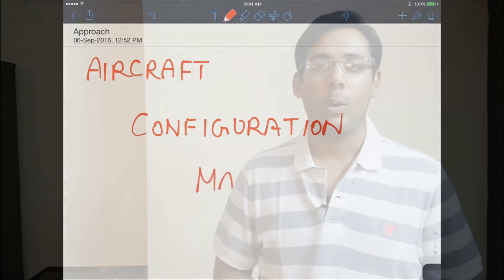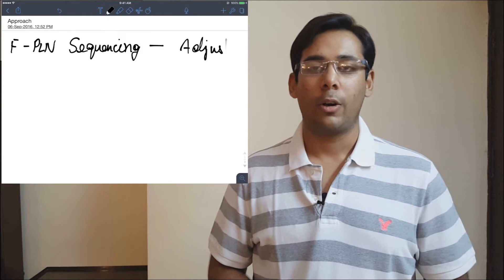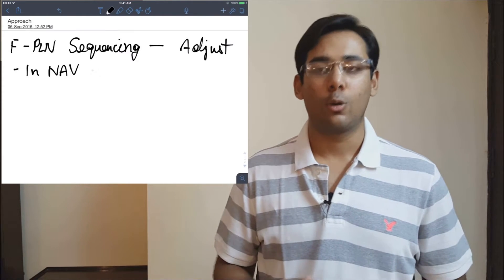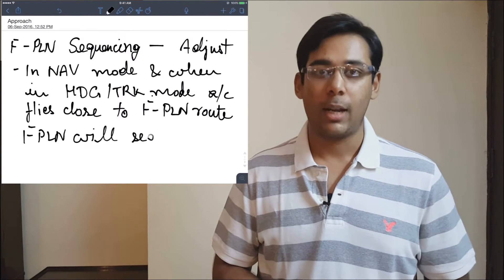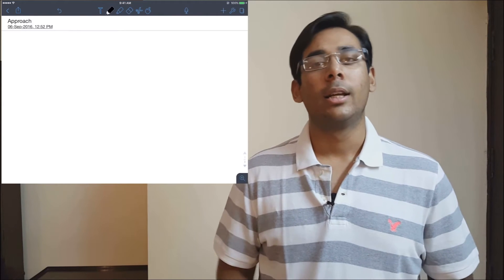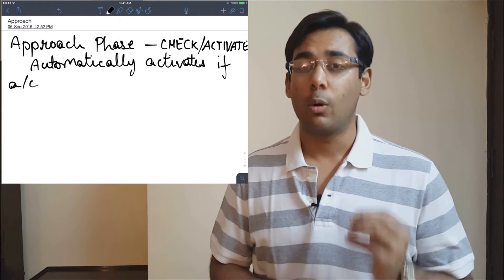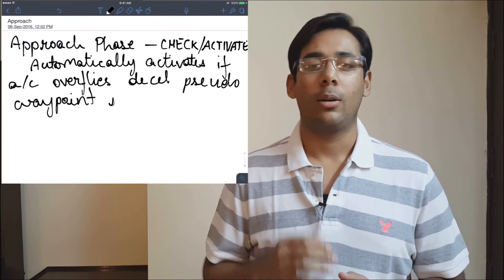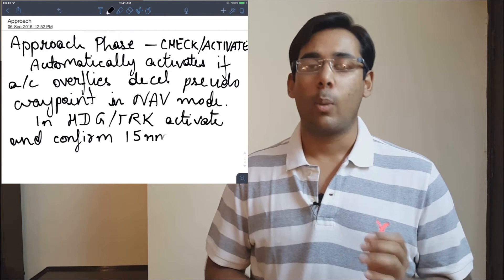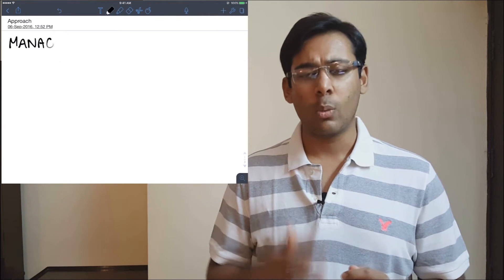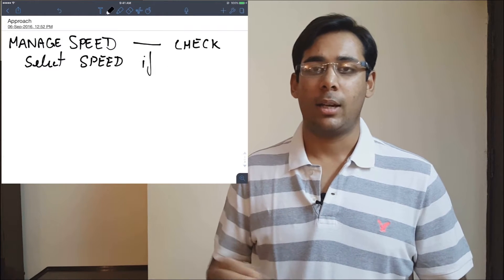Let's look at how and when to configure the aircraft. First, sequence the flight plan. If you're in NAV mode or heading/track mode and fly close to the flight plan route, the flight plan will sequence automatically; otherwise you'll need to manually sequence it. Then activate the approach phase or check if it's already activated. In NAV mode, overflying the deceleration waypoint activates it automatically. In heading/track mode, activate it manually when you're 15 nautical miles from touchdown.